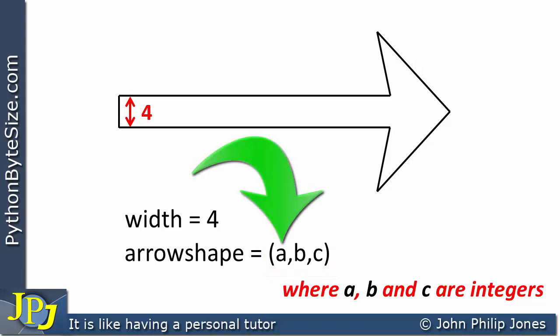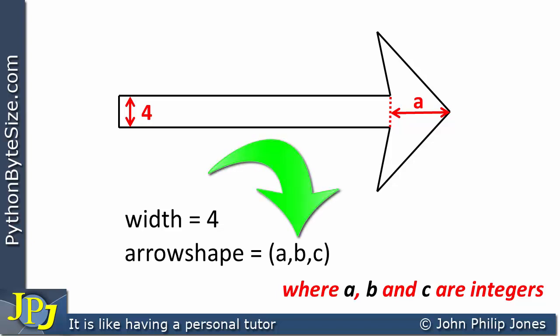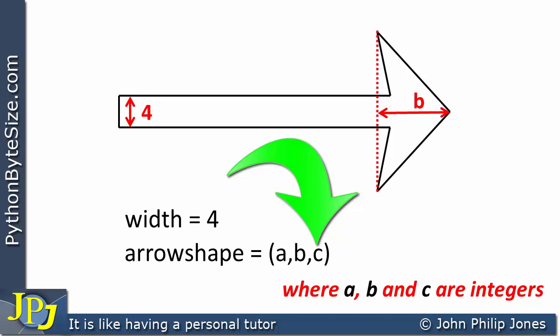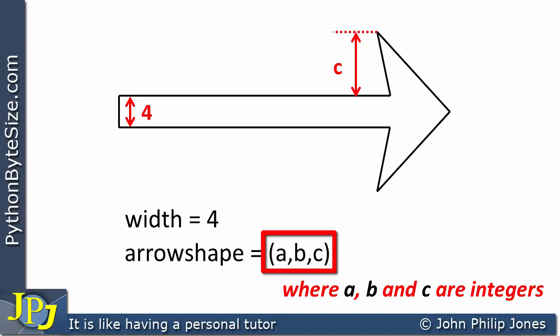Let's consider the first element in the tuple, a. That defines the distance from the tip of the arrowhead to where the dotted lines are shown. The second element, b, represents the distance from the tip to where another set of dotted lines appear on the diagram. The third element, c, is responsible for the distance shown as the width of the arrowhead base. Changing the numbers within the tuple gives arrowheads of different sizes and different shapes.